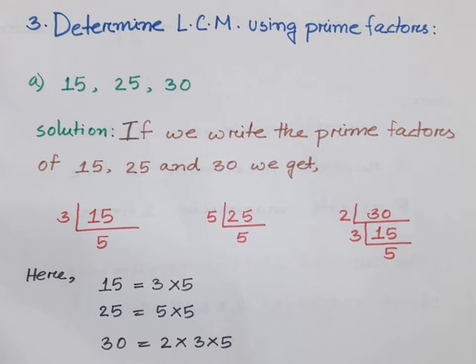For part (a), the three numbers are 15, 25, and 30. We will use the prime factorization method to find the LCM. For 15: it is not divisible by 2 since it is odd, so we divide by 3 to get 5. So the prime factorization of 15 starts with 3 and gives 5.